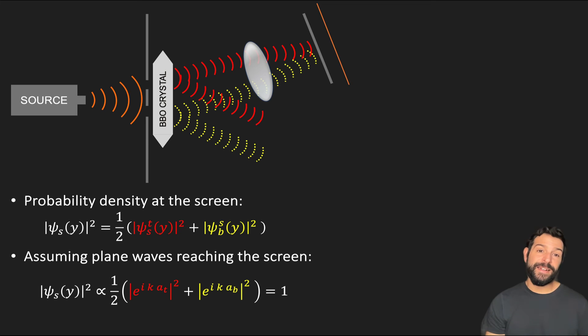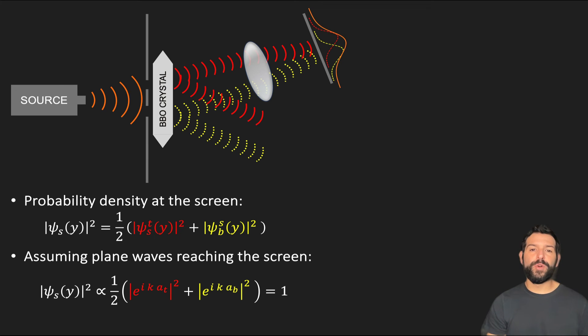And again, the reason we don't get a distribution proportional to the sum of two more localized functions is due to our plane wave assumption.